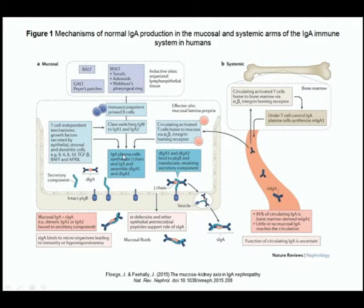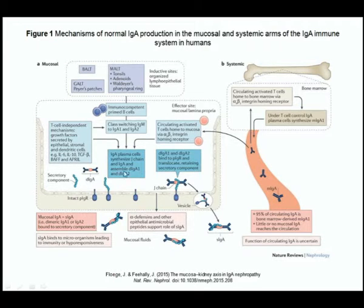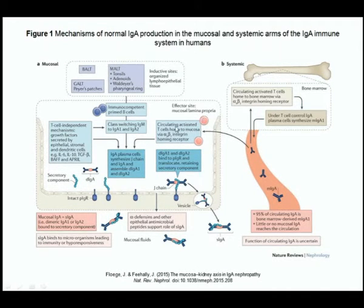The IgA plasma cell synthesizes J-chain and IgA and assembles dimeric IgA — not monomeric as seen in bone marrow-derived IgA1. Unlike the bone marrow where only T cells stimulate B cells, at the mucosal level there are additional direct stimuli: pathogens directly, and circulating T cells that can enter the lamina propria and stimulate B cells via alpha-4 beta-7 integrin homing receptors.